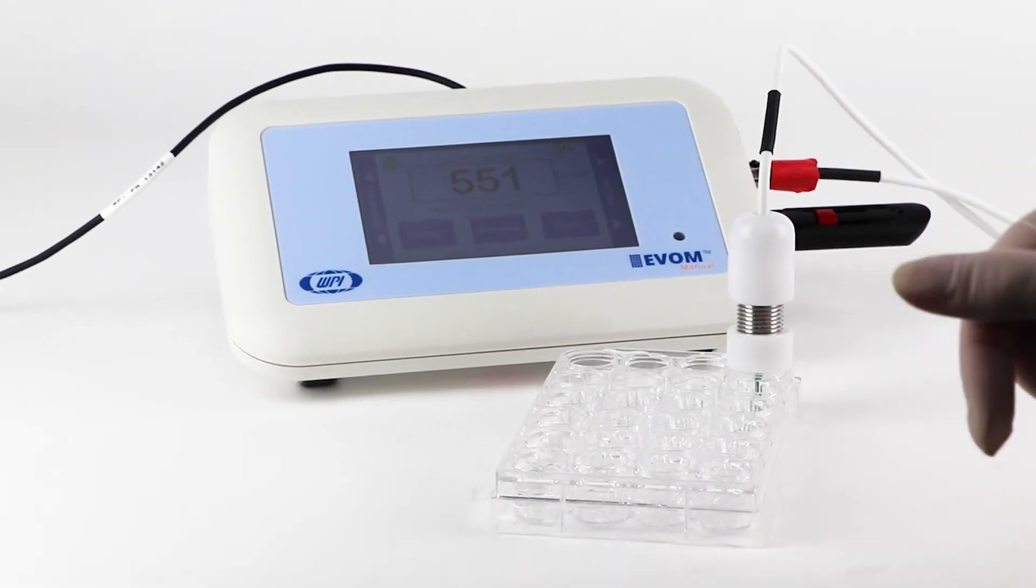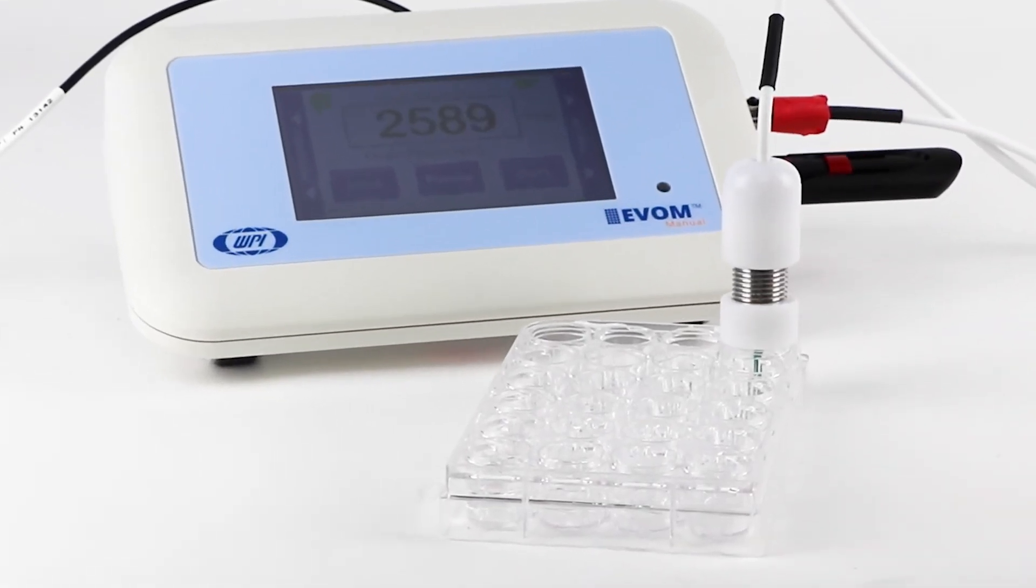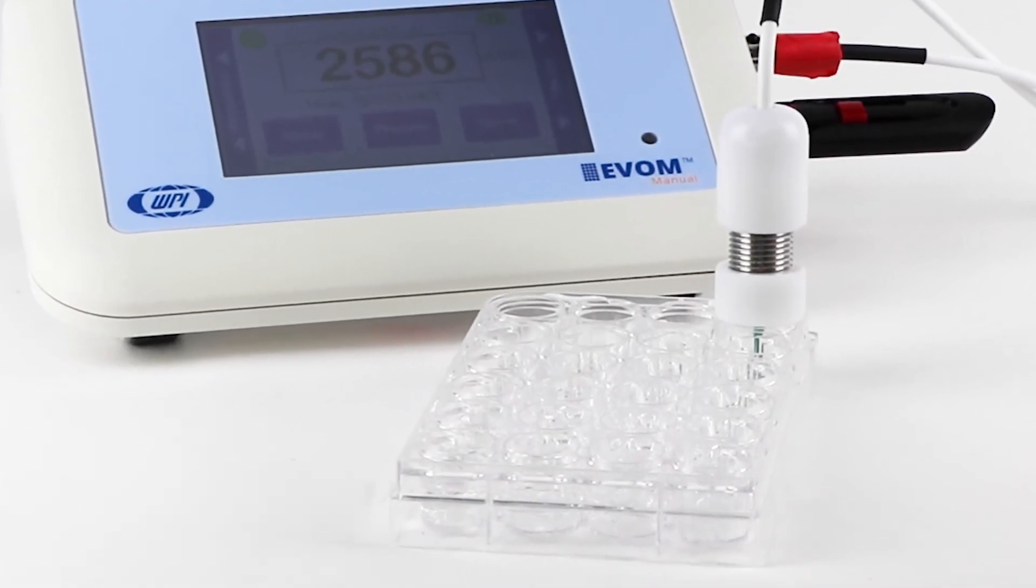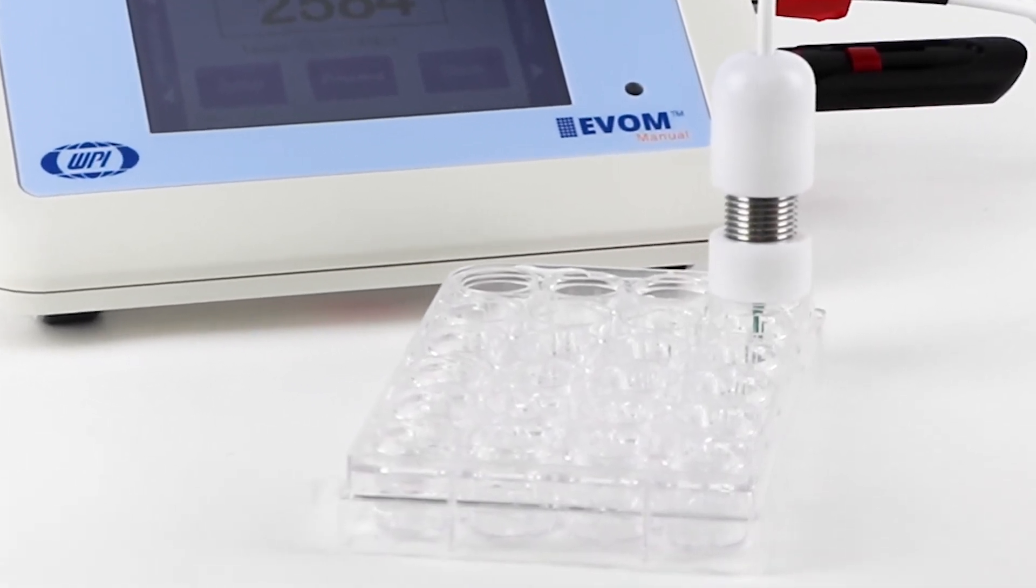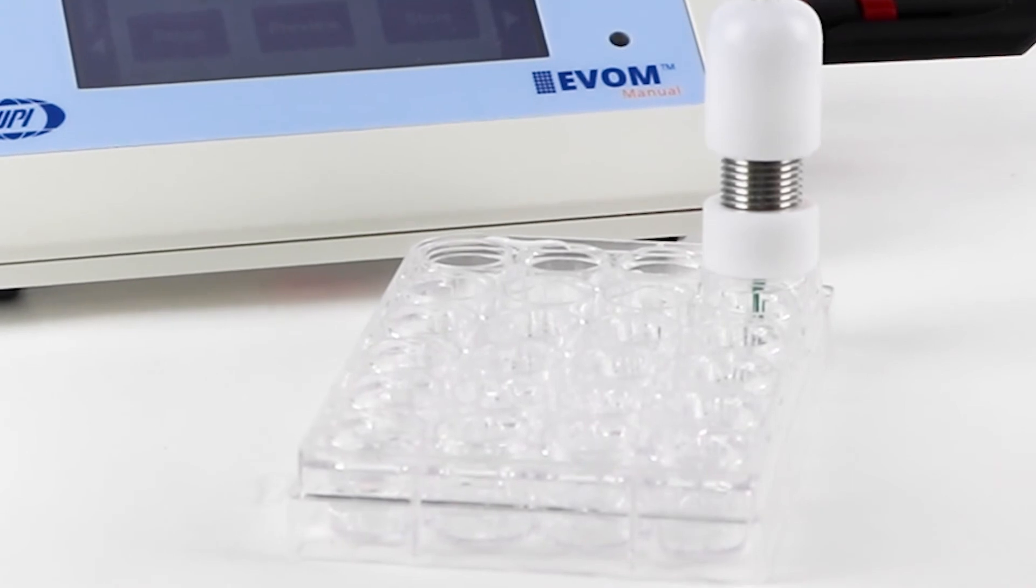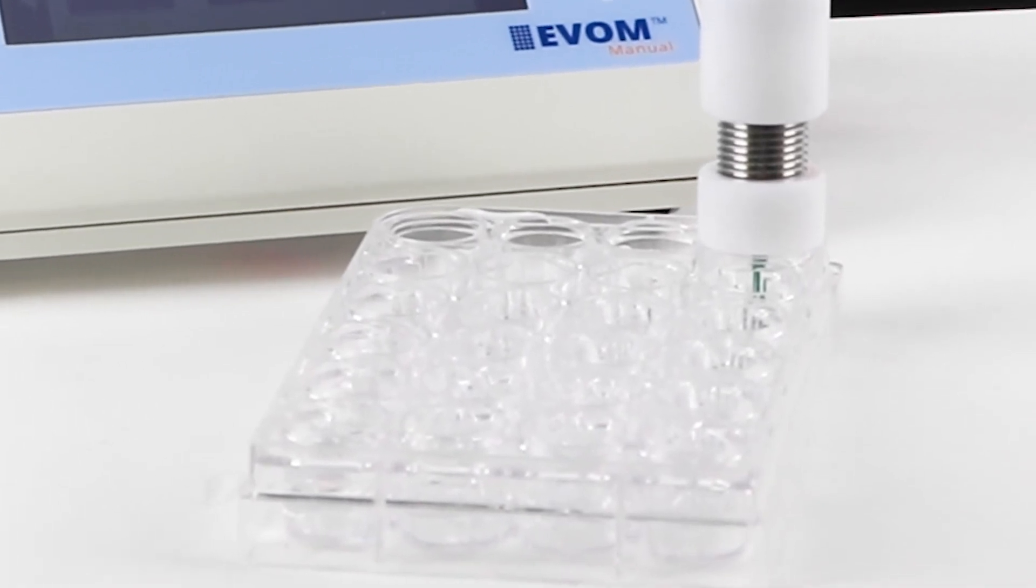The blank is the resistance value of a trans well with no cells, only media. Subtracting the value of the blank gives you the value of the resistance of your cell culture.